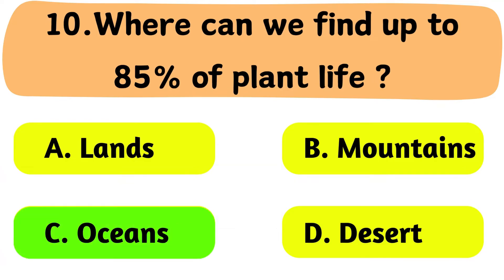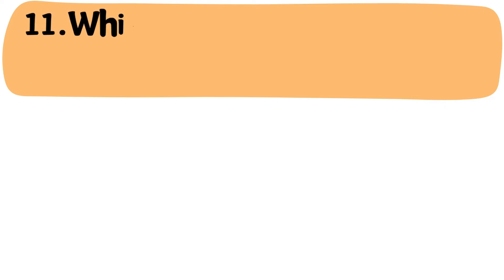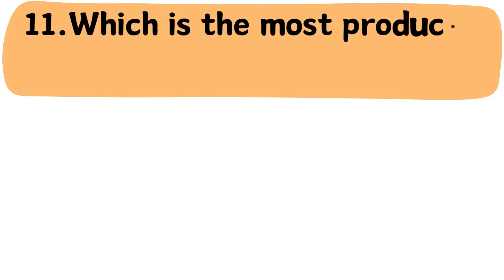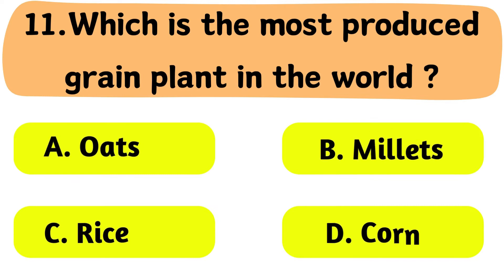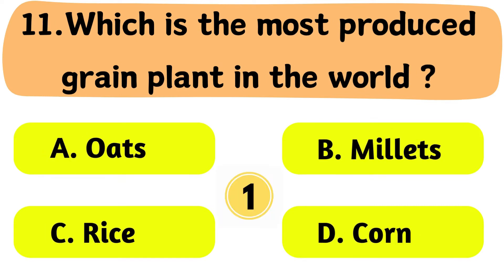Question No. 11: Which is the most produced grain plant in the world? A. Oats. B. Millets. C. Rice. D. Corn.